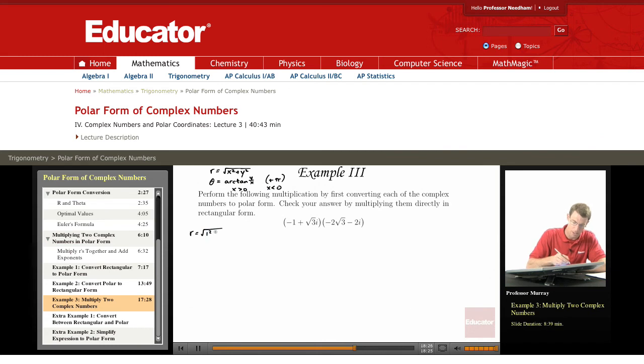So in the first one, r is equal to 1 squared plus root 3 squared. That's 3, which is 2, square root of 1 plus 3.